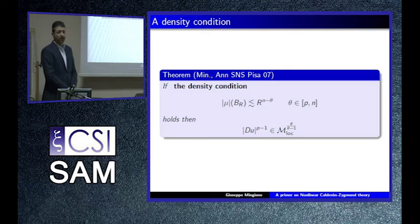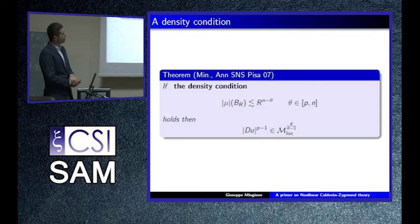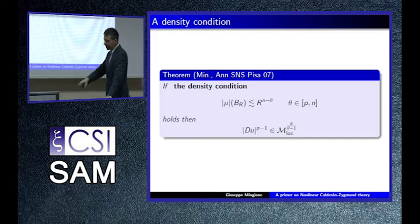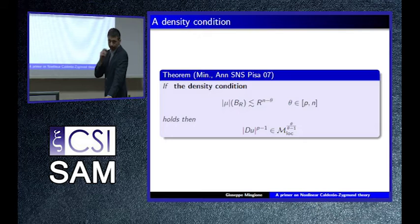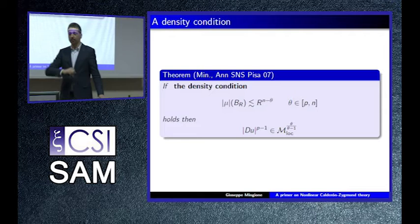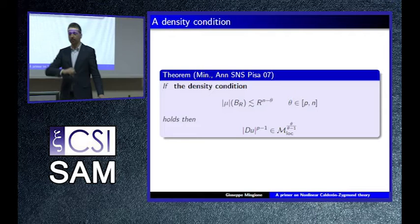It is easy to see that it is optimal using a classical lemma: if you have a set with Hausdorff dimension gamma then you can concentrate a measure on that set in a certain way, and then apply Véron's theorem. Observe that when theta equals n — so there is no condition — you go back to the previous result. The less the measure concentrates, the better the integrability of the solution gets, because the solution cannot concentrate and blow up too fast on too large sets. When theta is smaller than p, the measure belongs to the dual and the solution is actually in W^{1,p}, so the gradient is in L^p — the result is sharp.